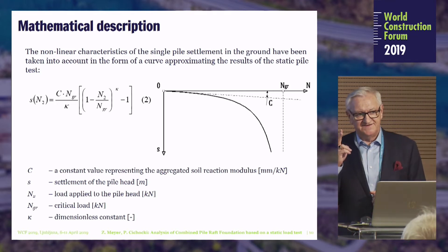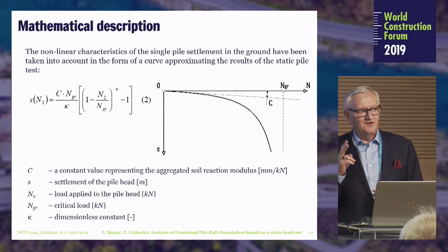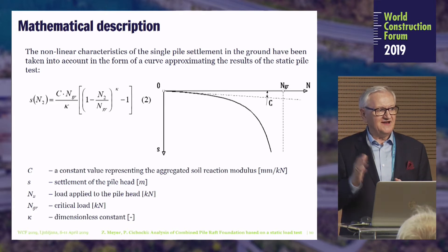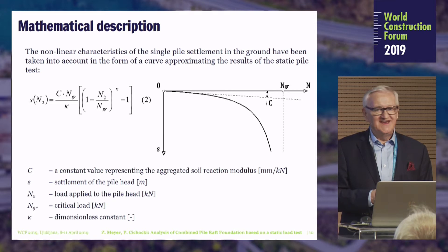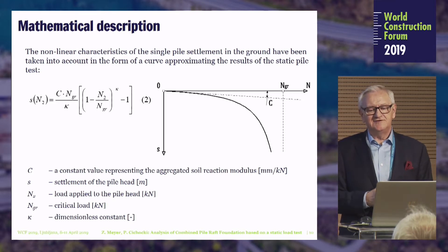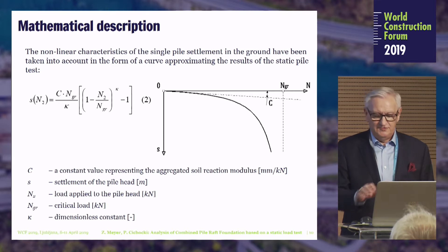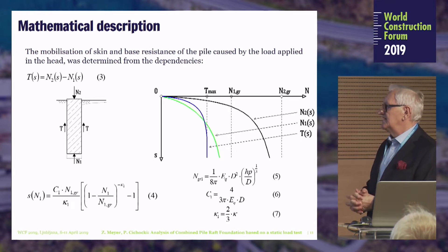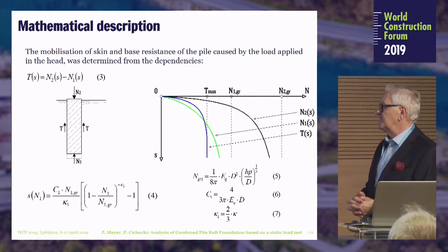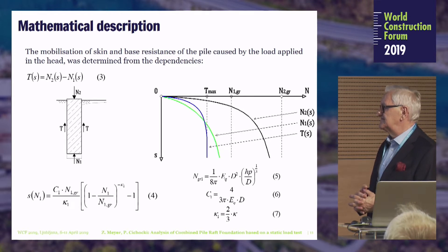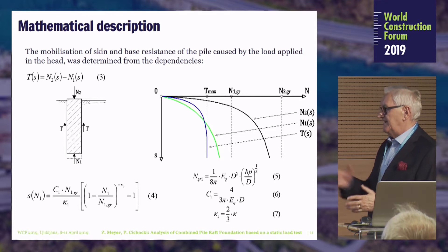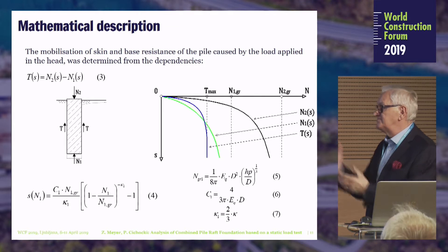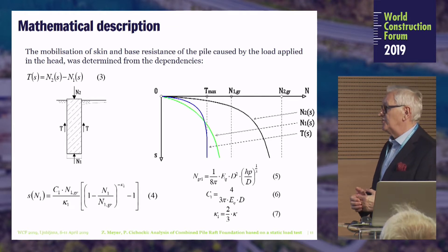From this curve we can derive two additional curves mathematically: one showing what is going beneath the toe, and the other what is at the skin. If we know those skin and toe curves depending on load or on settlement, we can proceed further. There are three curves — the toe, the skin, and the combined curve which is the total. Everything can be calculated and incorporated into the solution, which is highly non-linear.